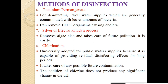Last method is the chlorination method, in which we add chlorine into the water for disinfection purpose. This chlorination method is universally adopted for public water supply because it is capable of providing residual disinfecting effects - that is a very important effect - for a longer period. And it takes care of any possible future contamination of that water. The addition of chlorine does not produce any significant change in pH value. That's why mostly in practice, in water treatment plants, chlorine is used as a disinfectant.